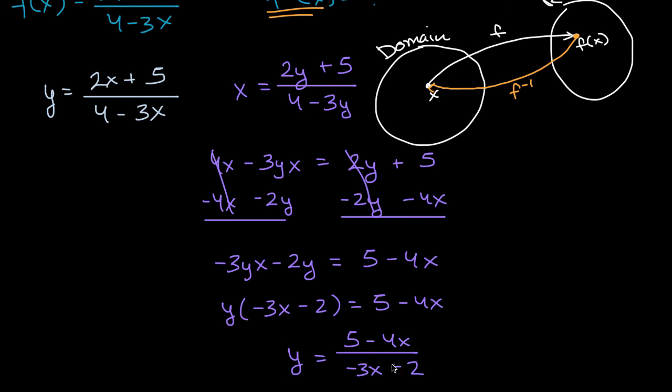Now, another way that you could express this, you could multiply both the numerator and the denominator by a negative one. That won't change the value. And then you would get four x minus five in the numerator, and in the denominator, you would get three x plus two. So there you have it. Our f inverse as a function of x, which we could say is equal to this y, is equal to this right over there.